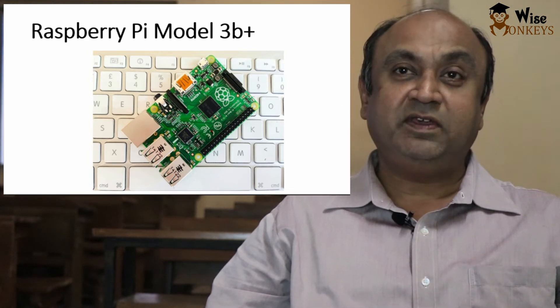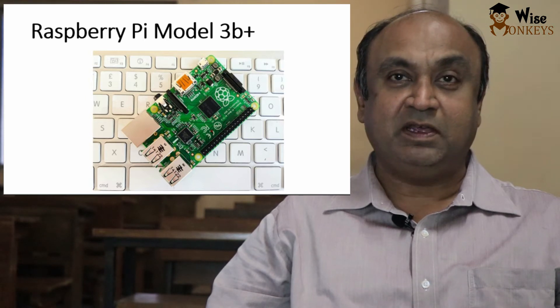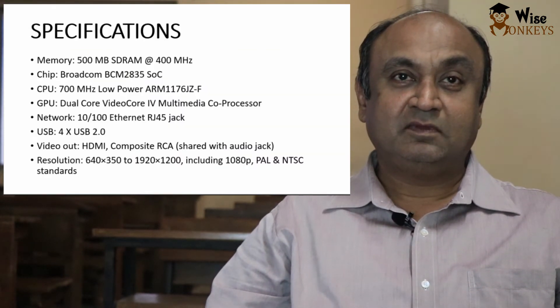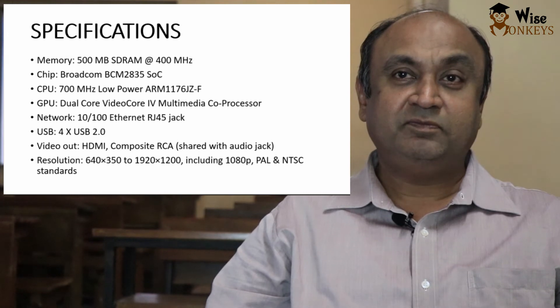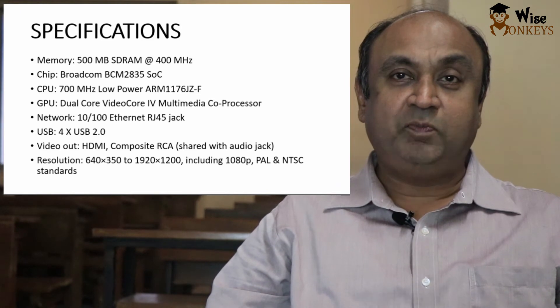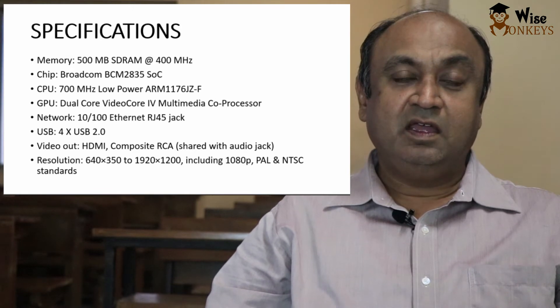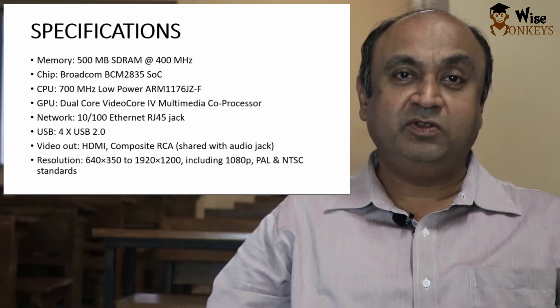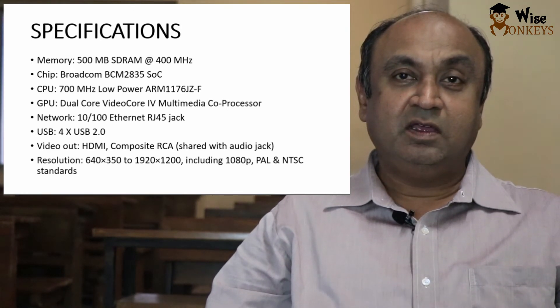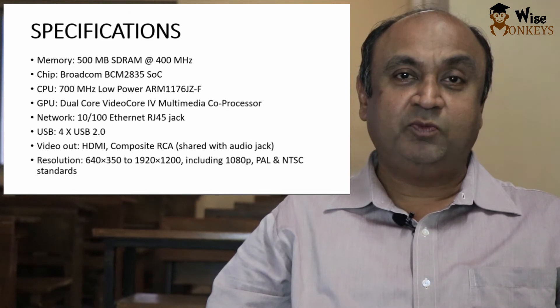Let us see the specifications of Raspberry Pi Model 3B Plus. It has 512 MB of memory at 400 MHz. It has Broadcom BCM2835 chip. The CPU is 700 MHz, low power ARM1176JZF. It has a graphical processor unit, dual core, video core 4 multimedia core processor.